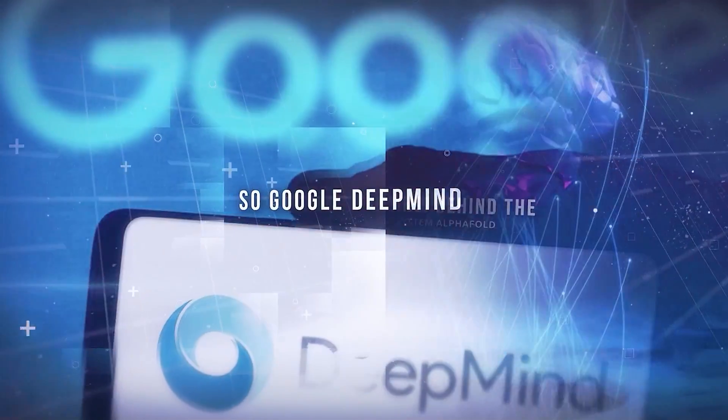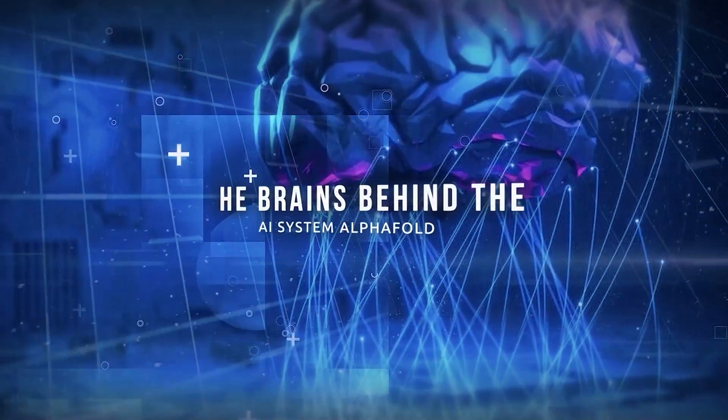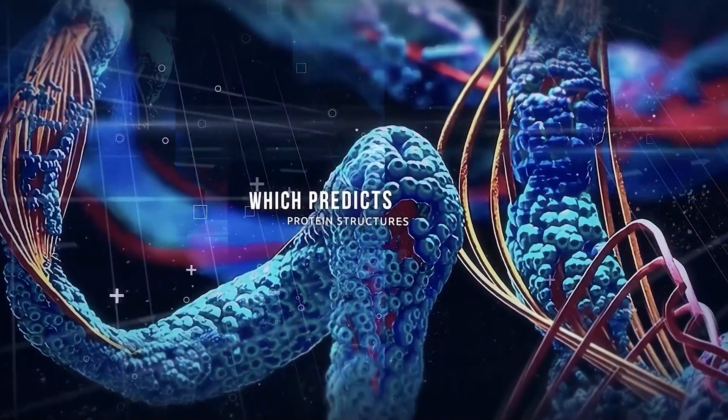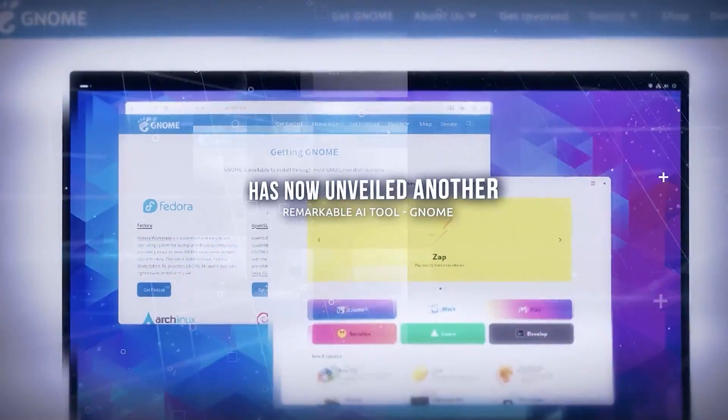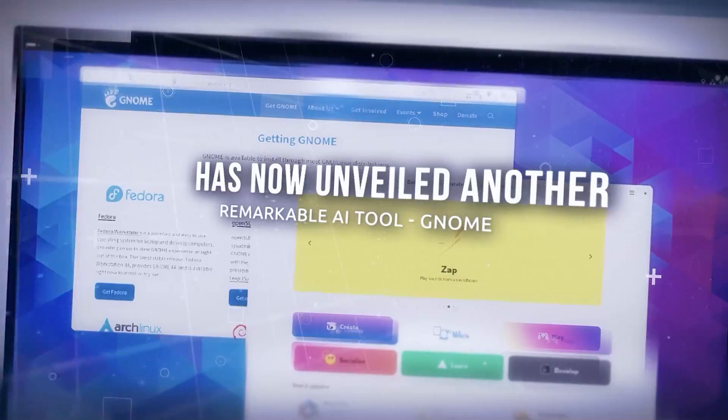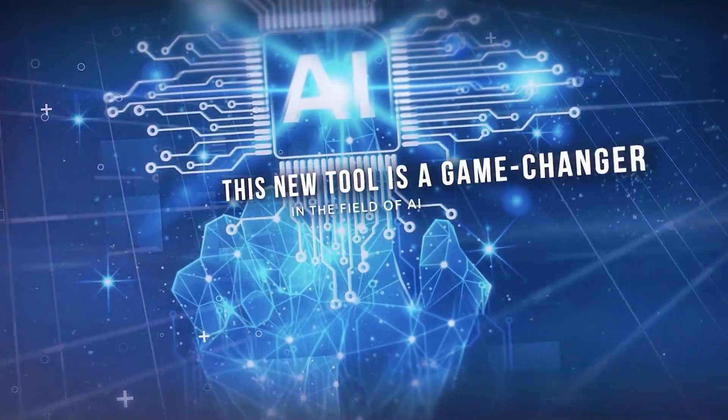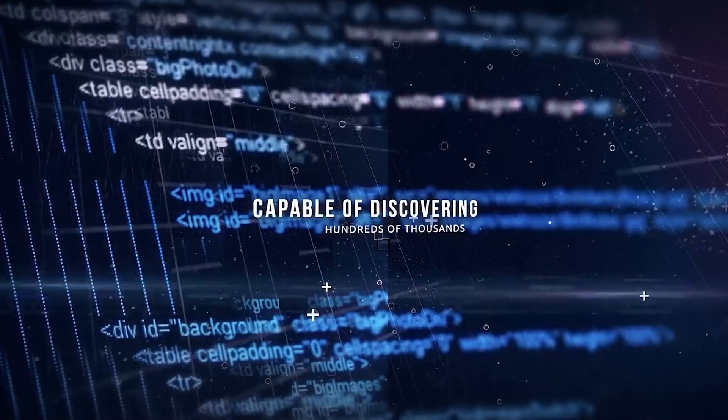Google DeepMind, the brains behind the AI system AlphaFold which predicts protein structures, has now unveiled another remarkable AI tool: GNoME. This new tool is a game changer in the field of AI, capable of discovering hundreds of thousands, perhaps even millions of new materials at an unprecedented pace.